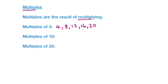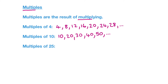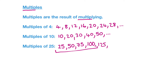We're also going to look at prime numbers and prime factors, strategies for identifying multiples, factors, and prime numbers, and systematic ways of listing them, and then some context questions - the wordy questions. So first of all, let's look at what multiples are. Multiples are the result of multiplying - that's probably not much of a surprise given how similar the words are.